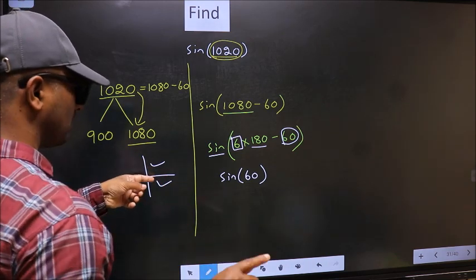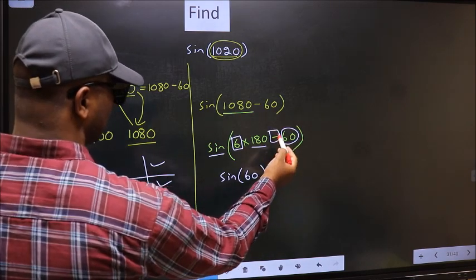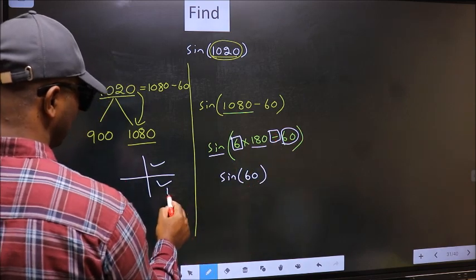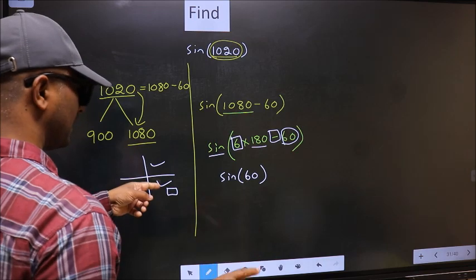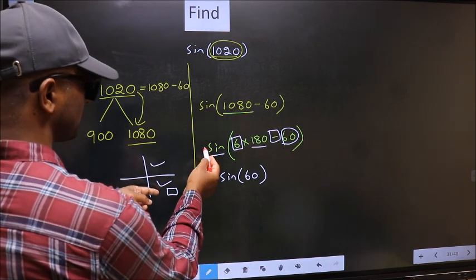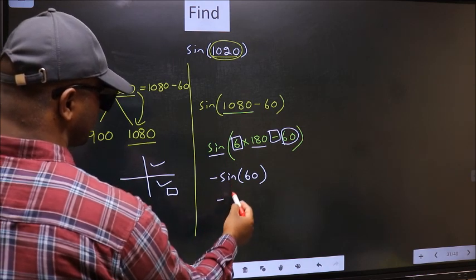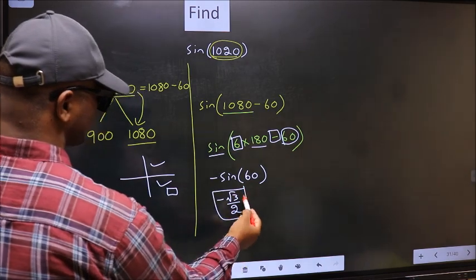So now to select the quadrant, we should look at this symbol. Here we have negative. That means the angle lies in the fourth quadrant. And in the fourth quadrant, sin is negative. So we should put negative. So negative sin 60 is root 3 by 2. This is our answer.